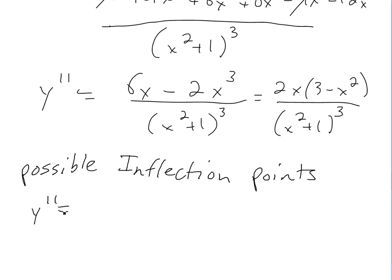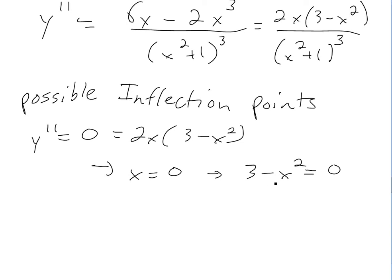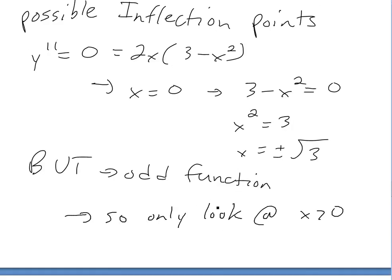For inflection points, set f″ = 0: 2x(3 − x²) = 0, giving x = 0 or 3 − x² = 0, so x = ±√3. Since this is an odd function, we only analyze x ≥ 0 and reflect, so we consider x = 0 and x = √3 as our candidates, reducing the number of intervals we need to check from four to two.